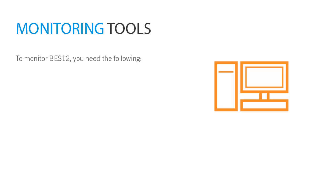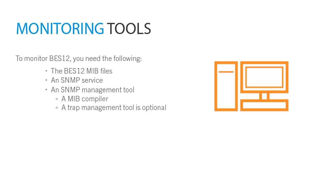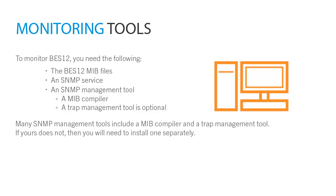To monitor BES-12, you need the following: the BES-12 MIB files, an SNMP service, an SNMP management tool, a MIB compiler, and a trap management tool, which is optional. Many SNMP management tools include a MIB compiler and a trap management tool. If yours does not, then you will need to install one separately.